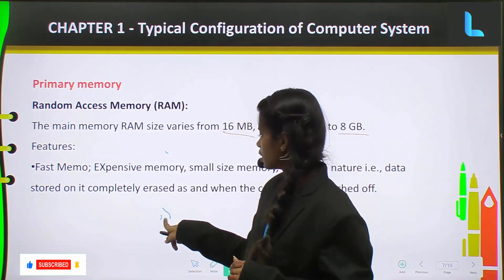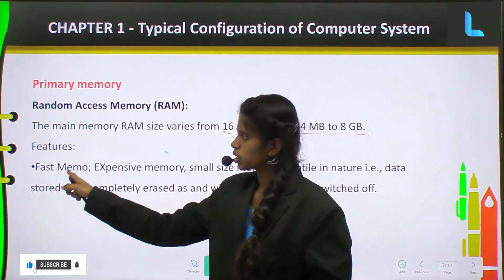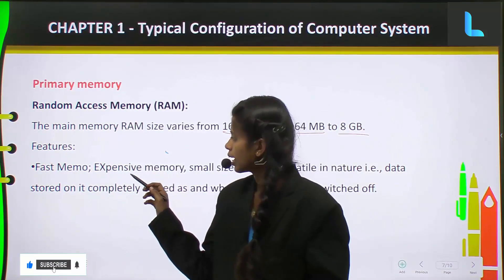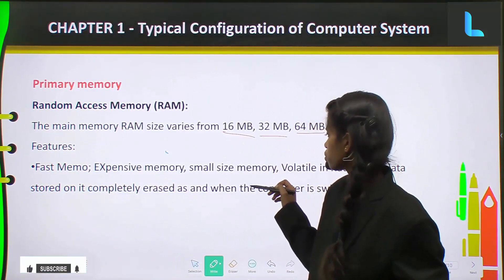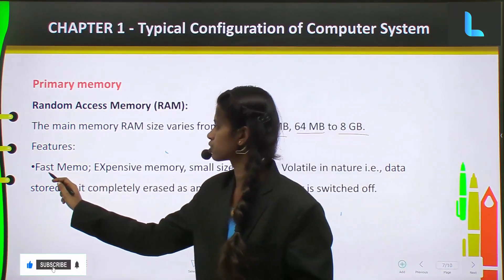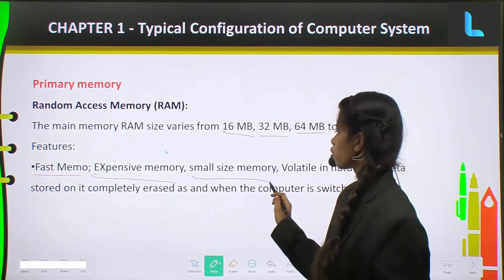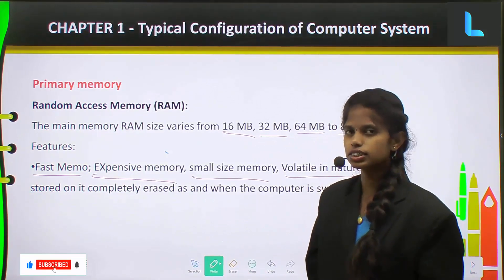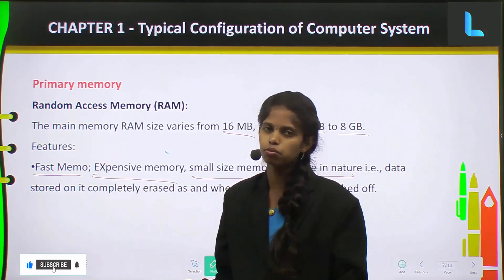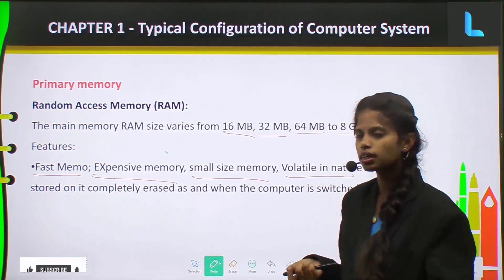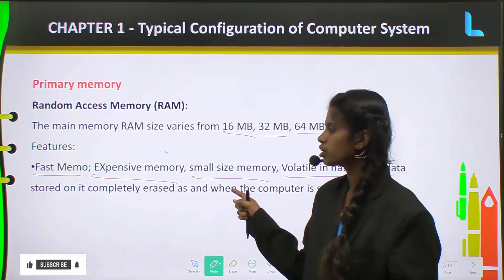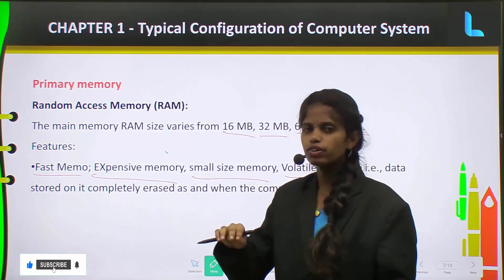The features of RAM are: fast memory, expensive memory, small size memory, and volatile in nature. What does volatile in nature mean? When you turn off the system without saving anything, whatever you are working on currently will be erased.